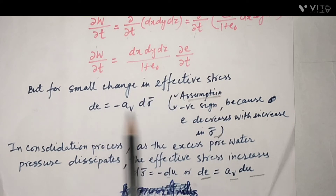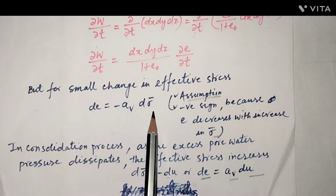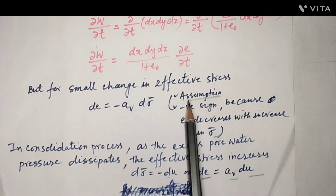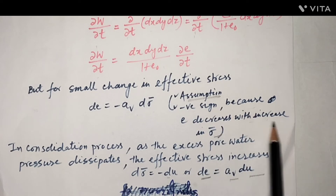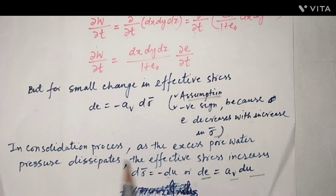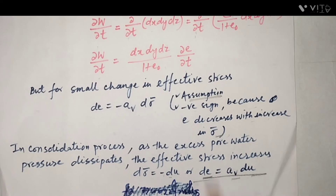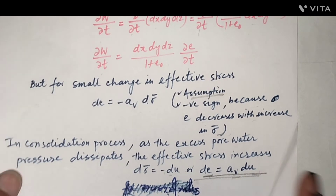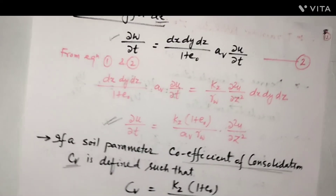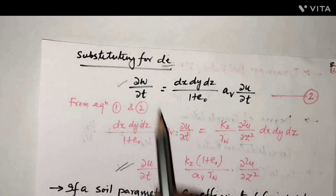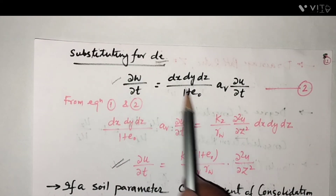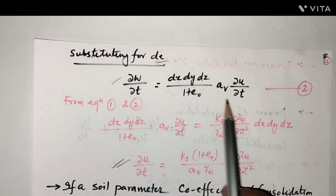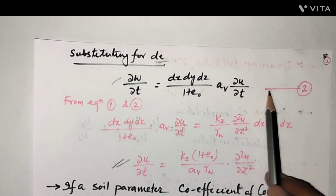In the consolidation process, as excess pore water pressure dissipates, the effective stress increases: dσ̄ = −du, so de = Av · du. Substituting for de, equation ∂W/∂t becomes: dx·dy·dz · (1/(1+e₀)) · Av · ∂U/∂t. This is equation number 2.